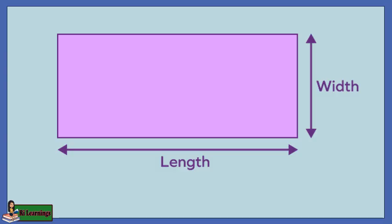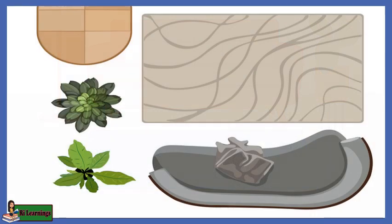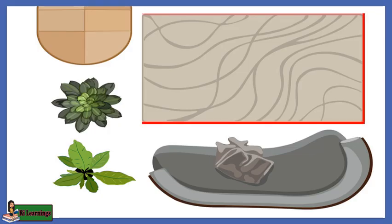In this lesson, you will learn about area measure where both length and width are considered. But what exactly is area? Imagine you have a rectangular carpet spread out on the floor. To find out how much space it covers, we need to consider both its length and its width. That's where area comes in. The term area refers to the space inside the boundary or perimeter of a closed shape.